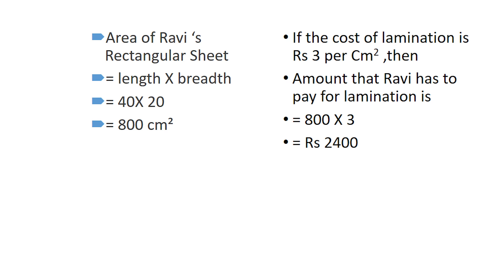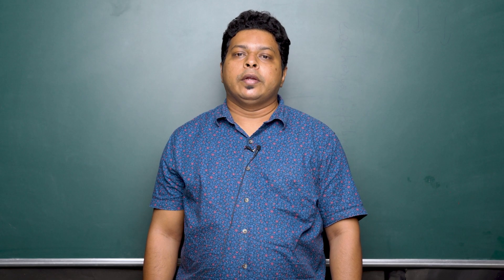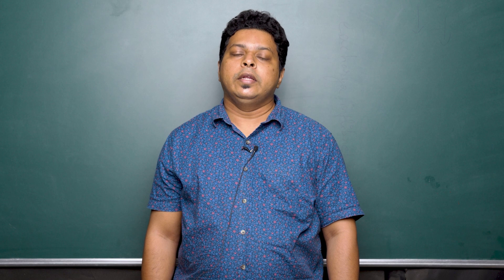Area of Ravi's rectangular sheet is equal to length into breadth, which is 40 into 20, which is equal to 800 centimeter square. If the cost of lamination is rupees 3 per centimeter square, then the amount Ravi has to pay for lamination is 800 into 3, which is equal to rupees 2400.